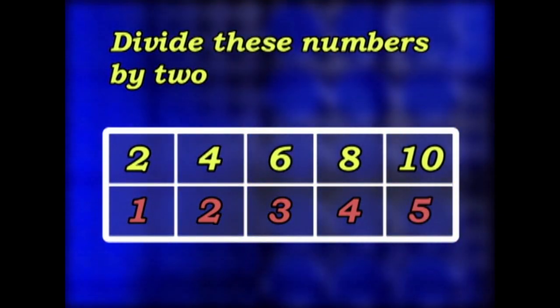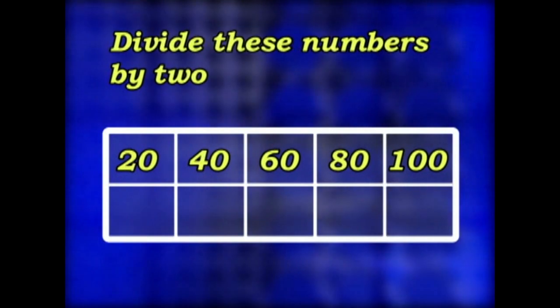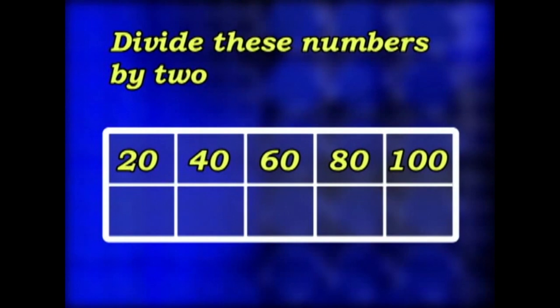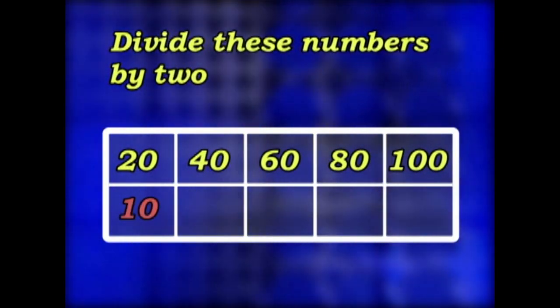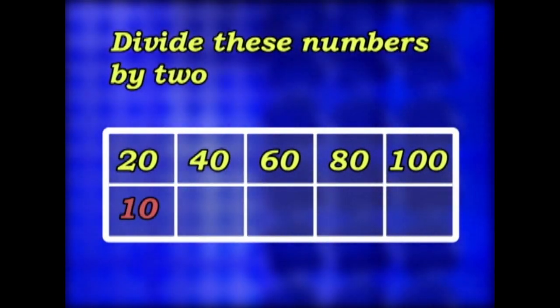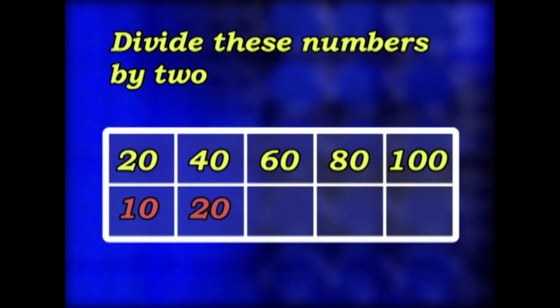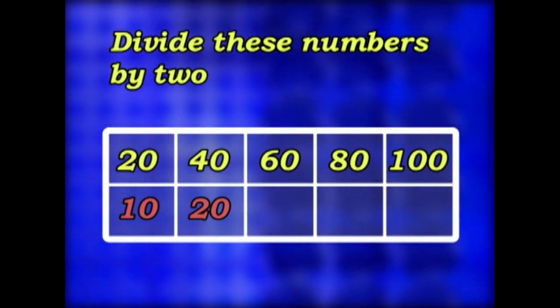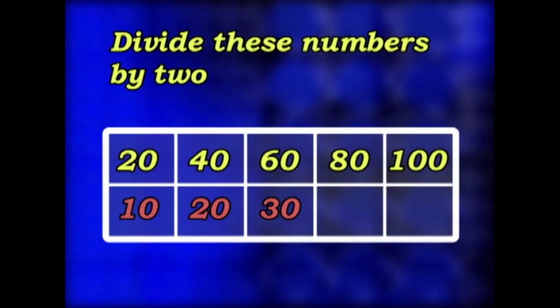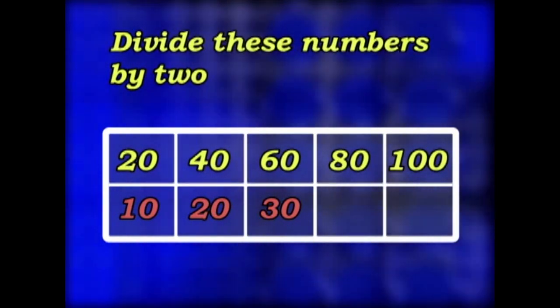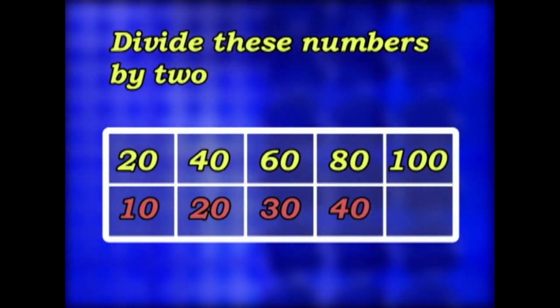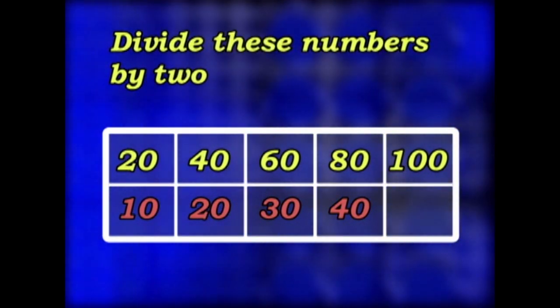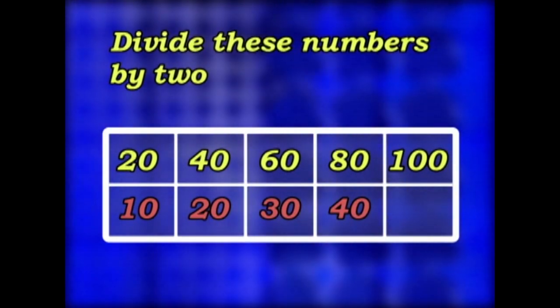All right, now divide these numbers by 2. 20. What's half of 20? 10. 40. What's half of 40? 20. 60. What's half of 60? 30. 80. What's half of 80? 40. And 100. What's half of 100? What's 100 divided by 2? That's 50.